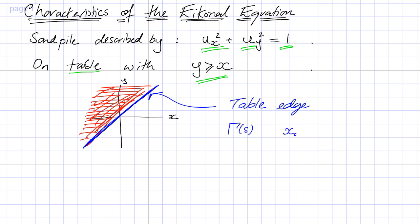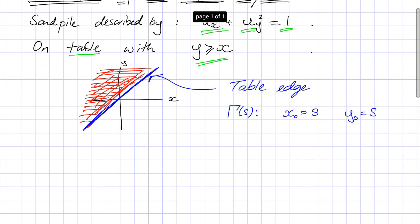So we can just introduce the x value along this curve, x naught, is just given by s. Y naught is also s, because x must equal y on this curve. Because this is a sand pile example, we know that the height of our sand on the boundary, u naught, will just be given by zero.